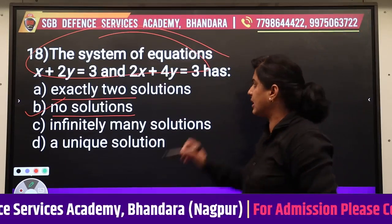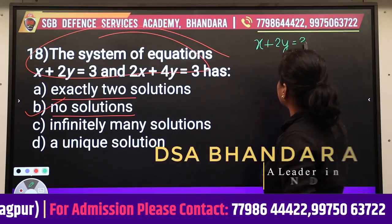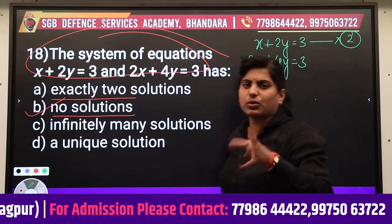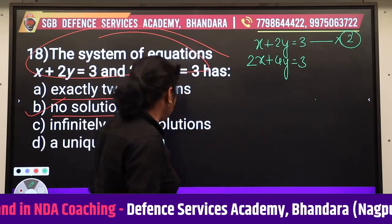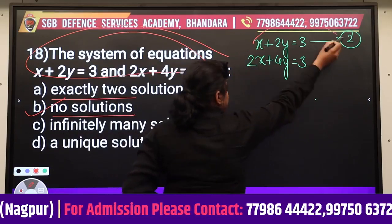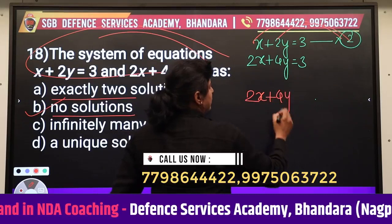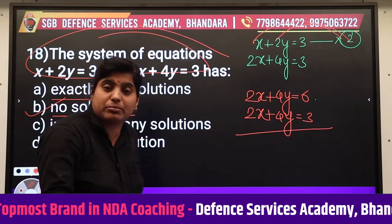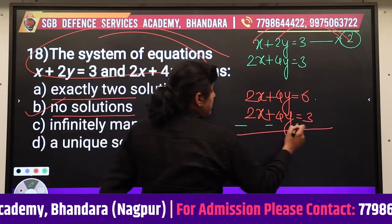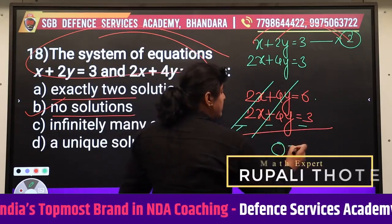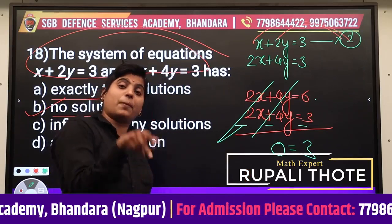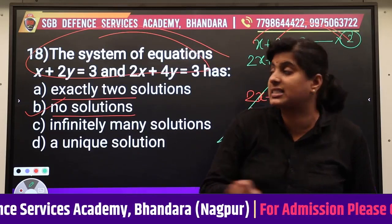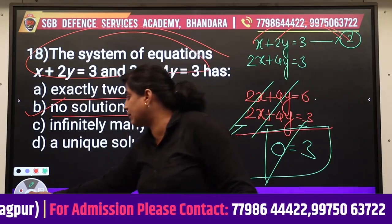To verify: take x + 2y = 3 and 2x + 4y = 3. Multiply equation 1 by 2: 2x + 4y = 6. Now subtract the second equation (2x + 4y = 3) from this: both x and y terms cancel, and we get 0 = 3, which is impossible. This confirms the system has no solution.